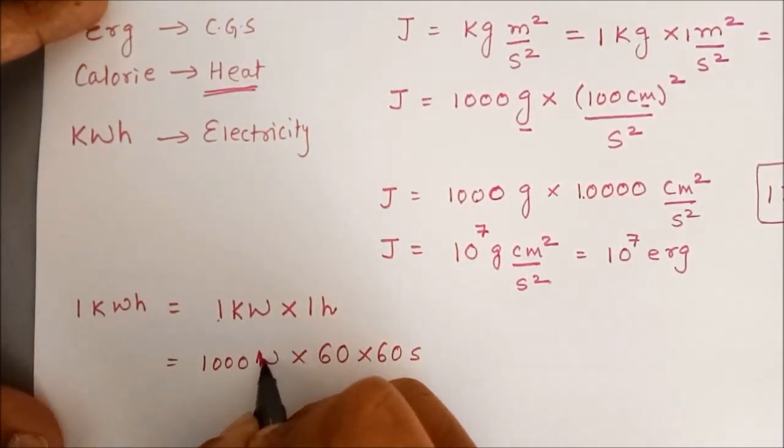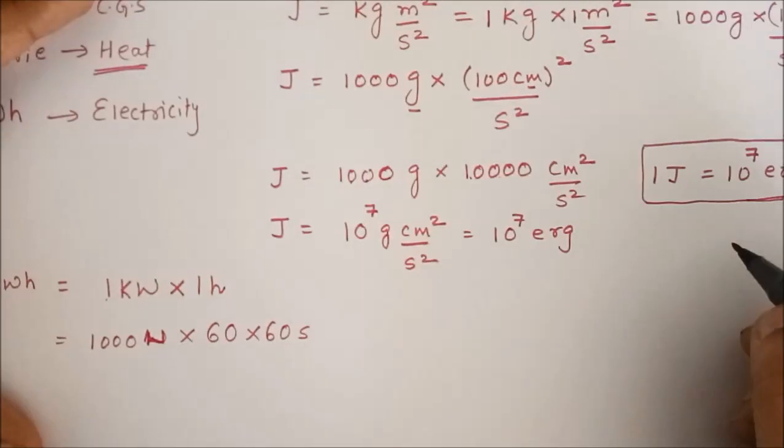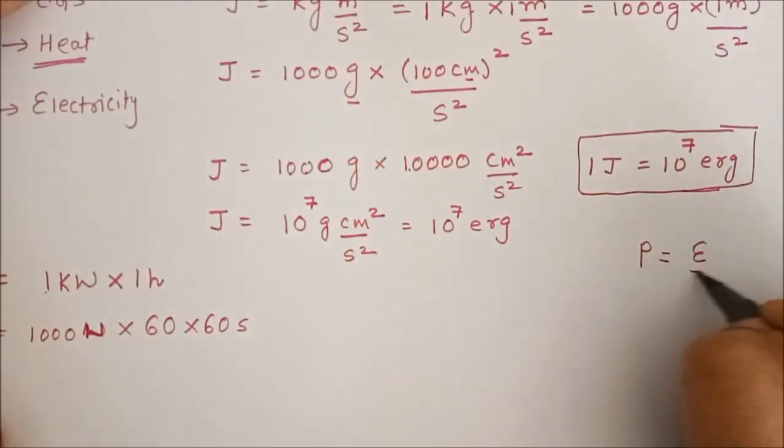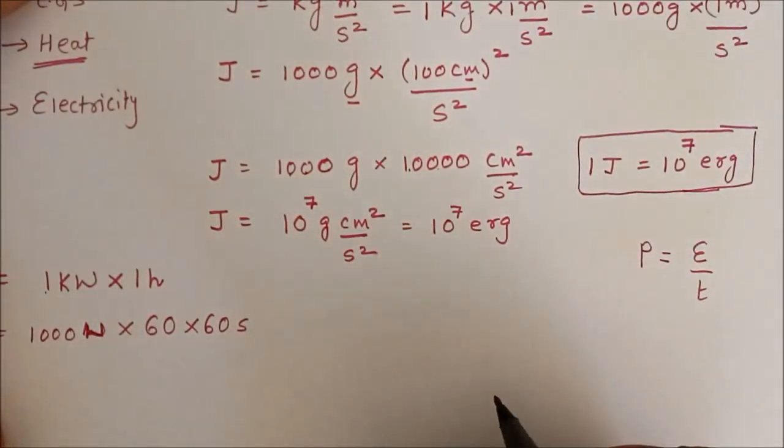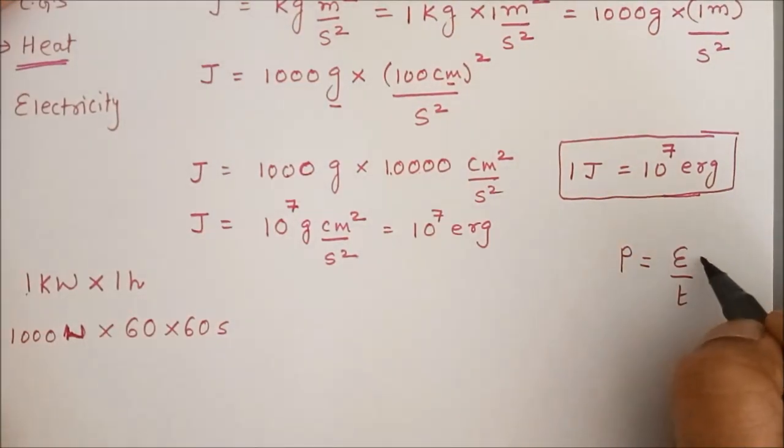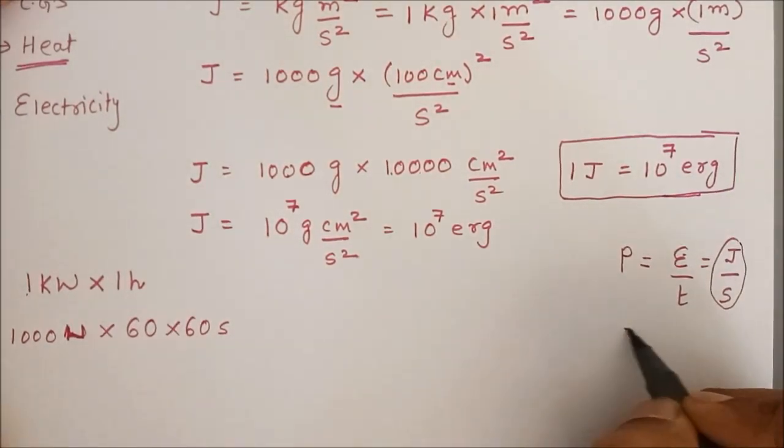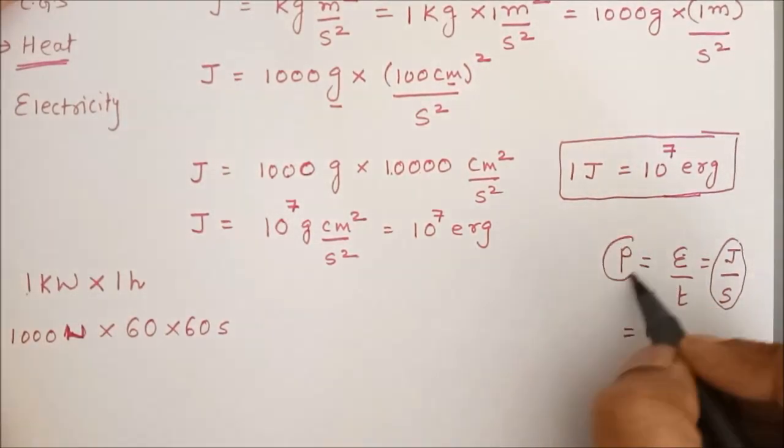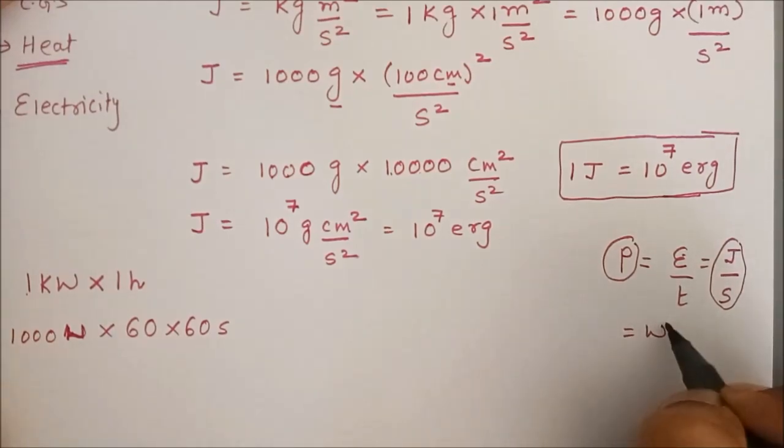Okay, now we might wonder what is W. W is actually power and power is given by energy upon time. Now, SI unit of energy is Joule and SI unit of time is second, so Joule per second is called Watt. So, the SI unit of power is Joule per second or Watt.